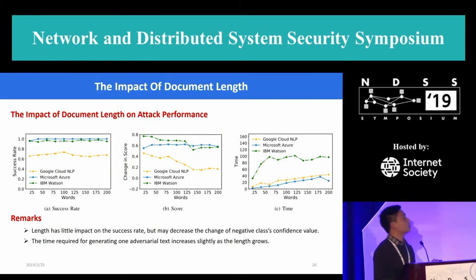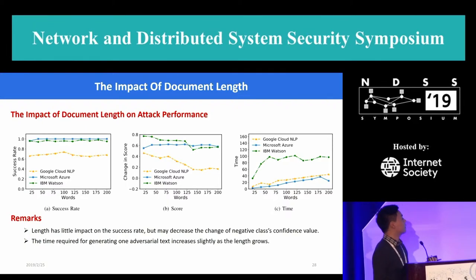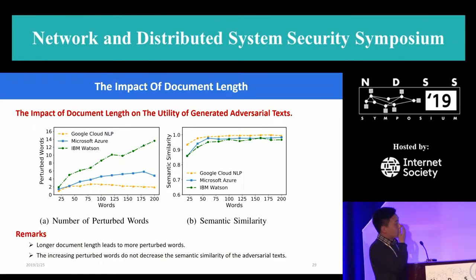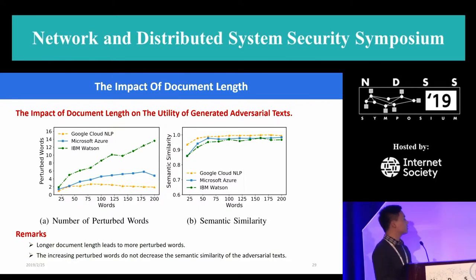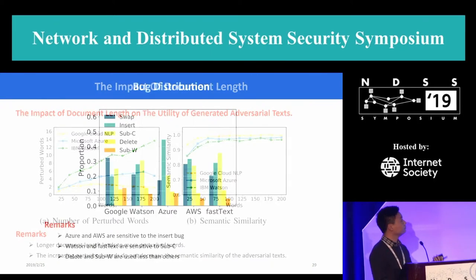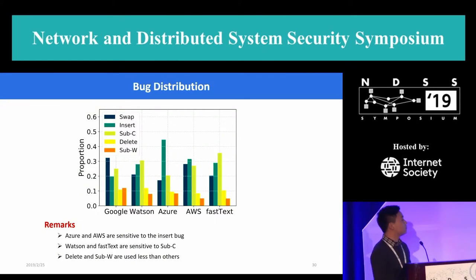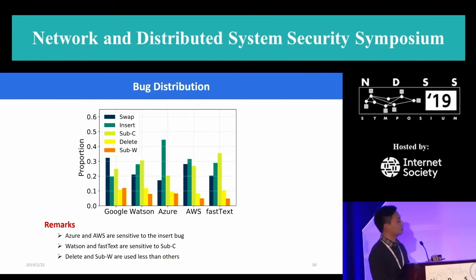We also analyzed the impact of document length on attack performance. From subfigure A and B, we can see that document length has little impact on success rates, but may decrease the change of negative confidence value. From subfigure C, we can see the time required for generating one adversarial text increases slightly as the length grows. Longer document length leads to more perturbed words, but the increasing perturbed words don't decrease the semantic similarity. We also analyzed the robustness of different platforms to different kinds of bugs: Zoom and AWS are sensitive to the insert bug, while word-level and fast text are sensitive to sub-C. Among the five kinds of bugs, delete and sub-W are used less than others.